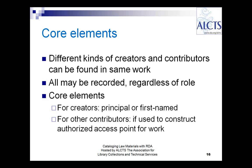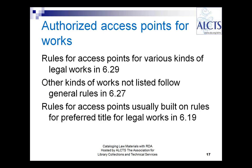It's only when you go to the rules for creating access points that you figure out what to do with those creators and other persons you've recorded. For creators, the principal creator or the first-named one is a core element, so it should always be recorded. For the other persons or corporate bodies, it's a core element if it's used to construct the authorized access point for the work. The rules for access points for various kinds of legal works are in RDA 6.29, and for works which do not fall into those categories, you go to the general rules in 6.27.